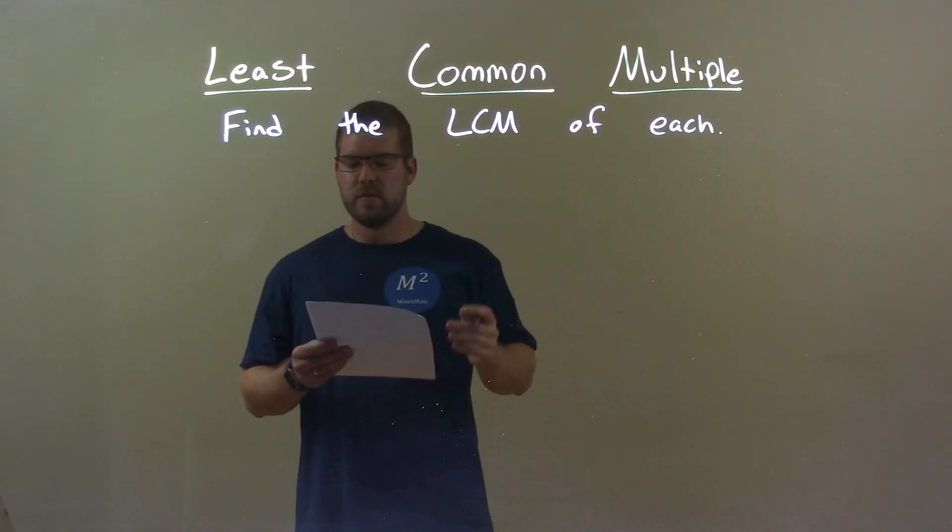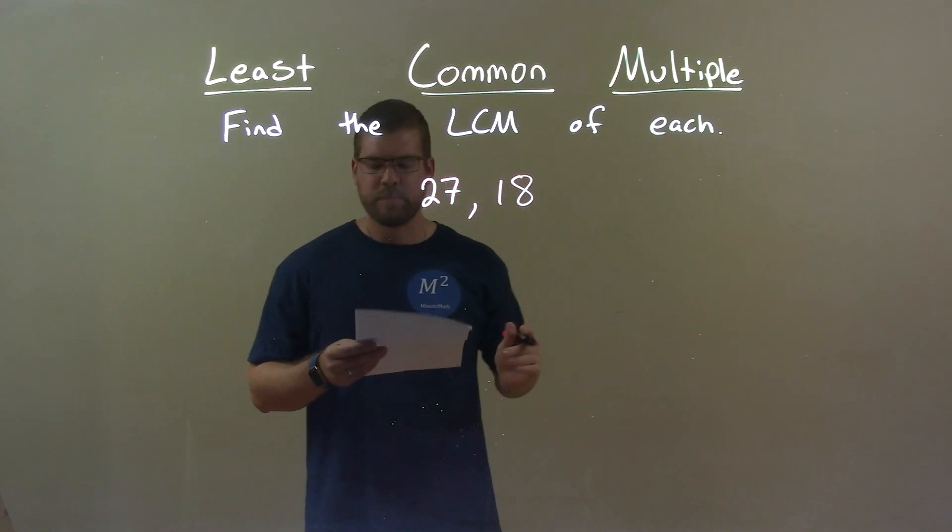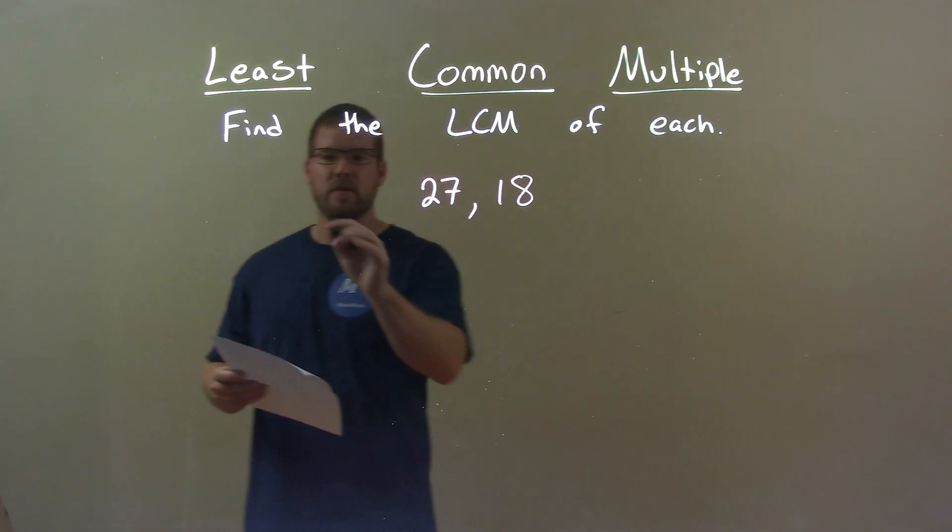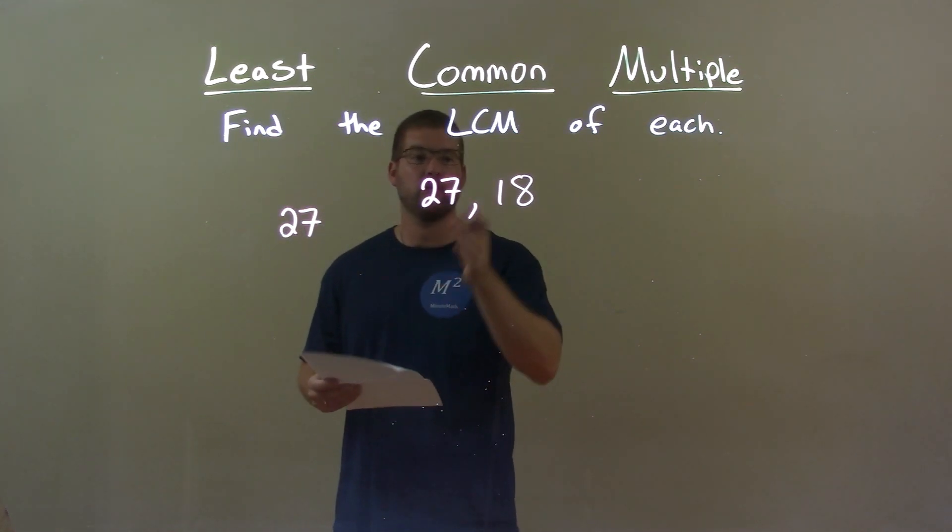We're going to find the LCM of each. So if I was given these numbers, 27 and 18, larger of the two is 27. So we go through the multiples of 27 and find the first one that's also divisible by 18.